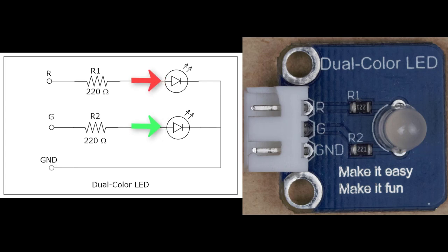One other important note is that in the schematic, we're showing two separate LEDs. That's actually not the case. This dual color LED is one LED. The schematic separates them just to make it easier to understand.